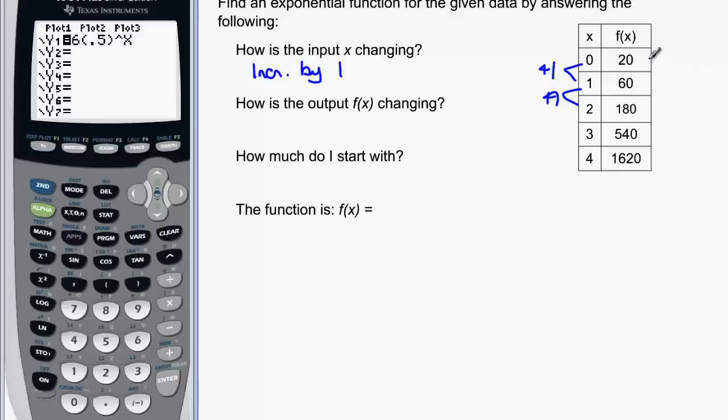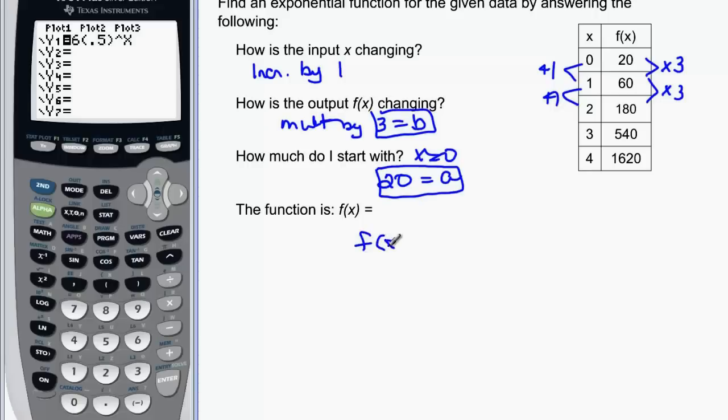How are the y values changing? Well it looks like from 20 to 60 I might have multiplied by three. And 60 times three would be 180. So we're multiplying by three. How much should we start with? Remember that's when x equals zero. And when x equals zero we started with 20. So that means that my 20 is my a and the three is my b. As long as x is increasing by one, I should just be able to write this function as f of x is equal to a which is 20 times b which is 3 to the x.